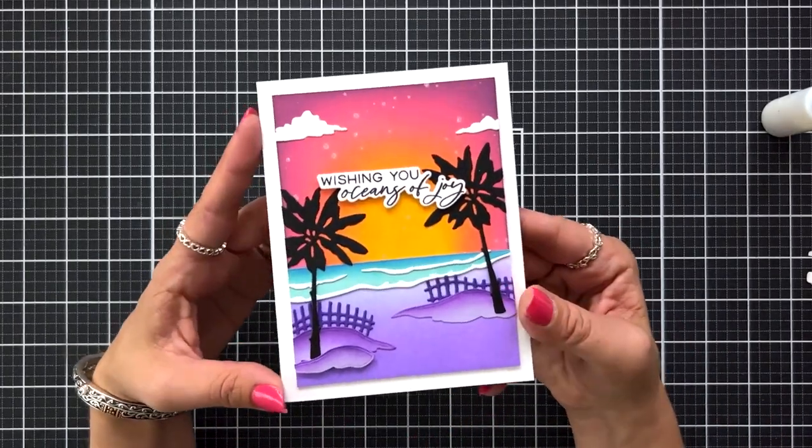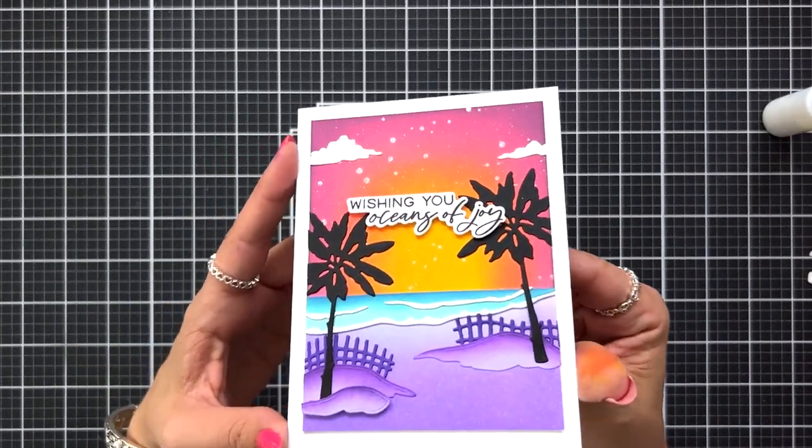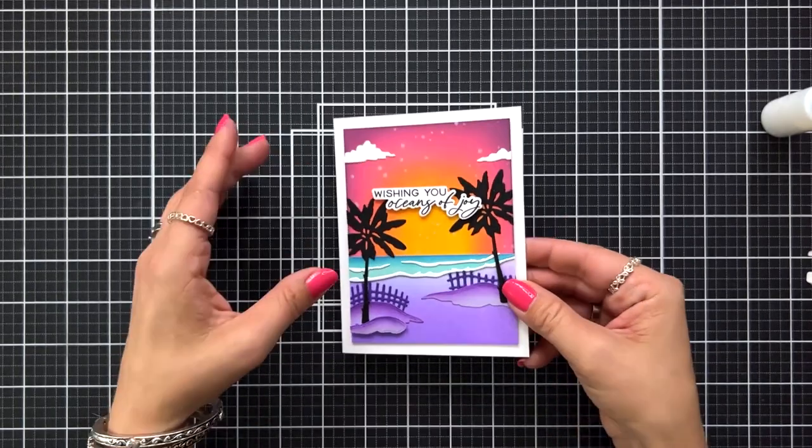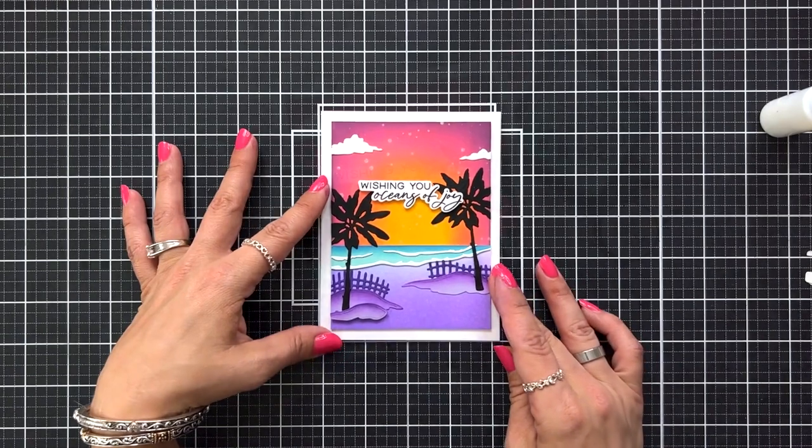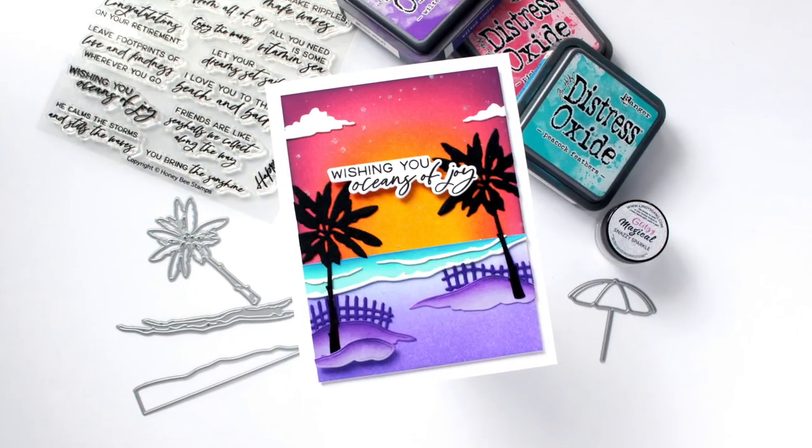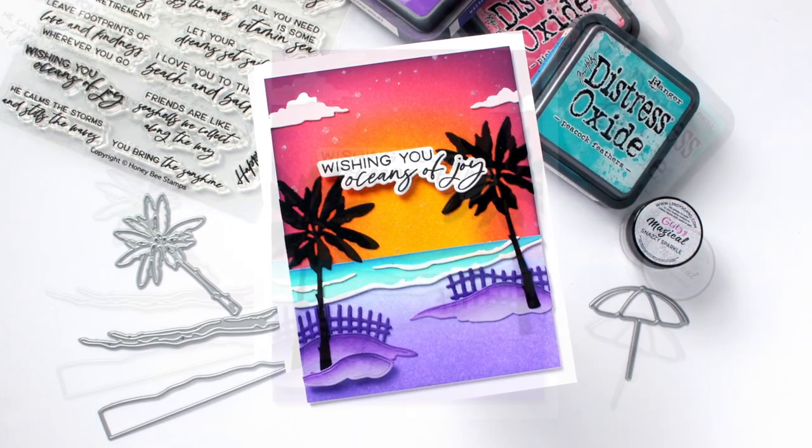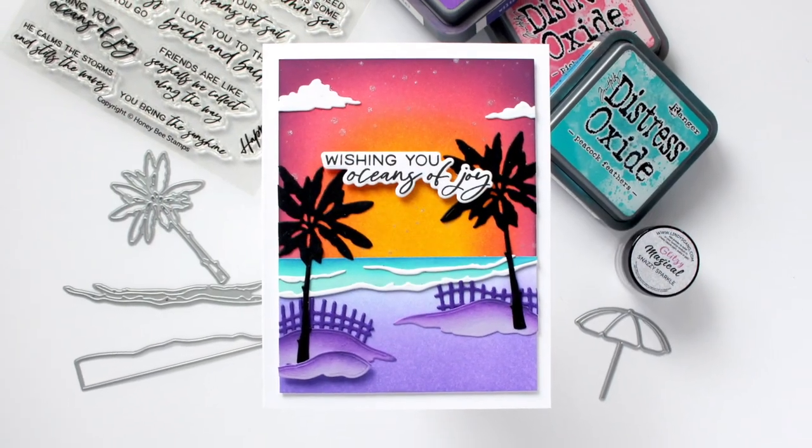That is going to finish off my tropical scene for you today, which I'm really happy how this came out and I love all the vibrant colors. These products will be available for purchase on the Honey Bee Stamps website on June 30th at 8 p.m. Central Time. Thank you so much for joining me today and see you again soon.